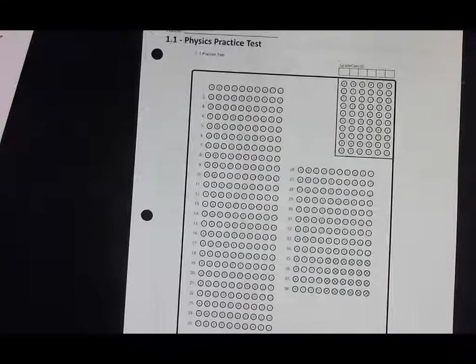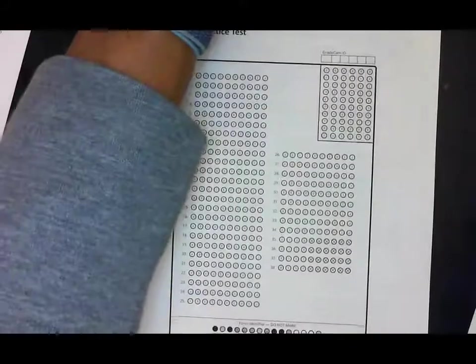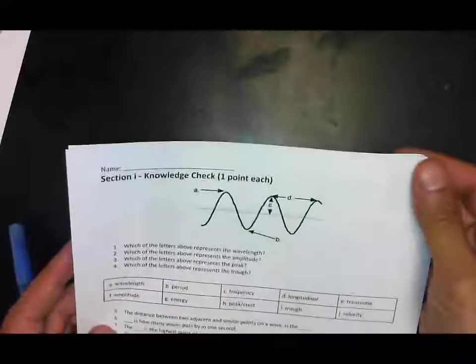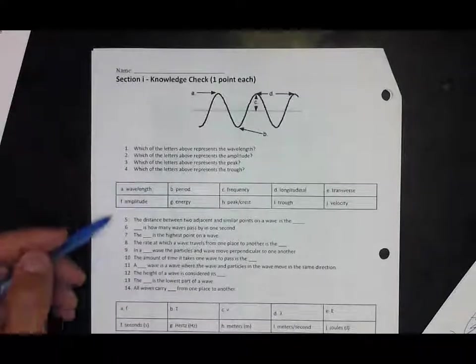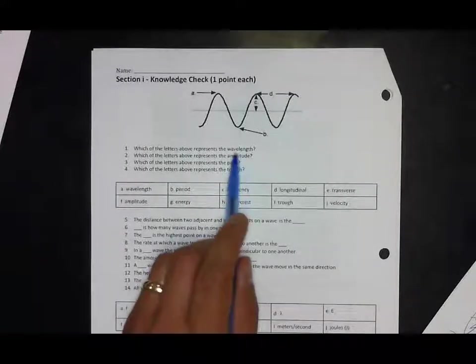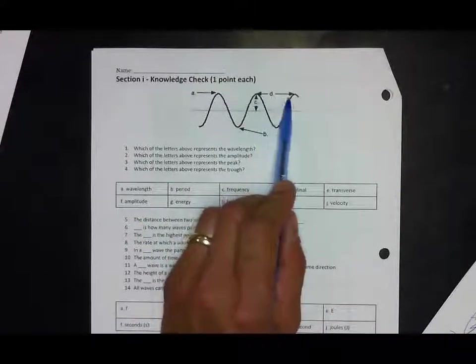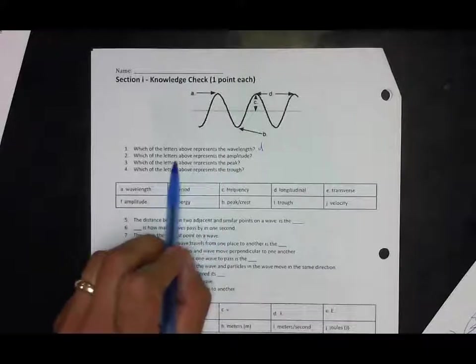Alright, so I'm going to go over this practice test and walk you through the questions for those of you that don't have time in class to do it. This is just wave structure stuff. Wavelength is the distance between two peaks here, so that's wavelength D.